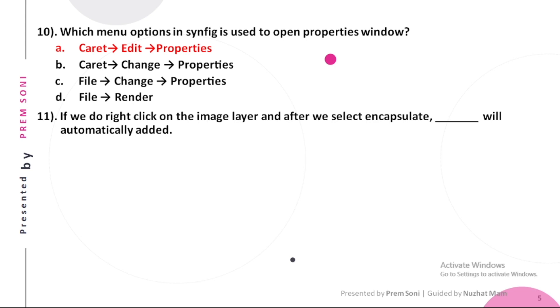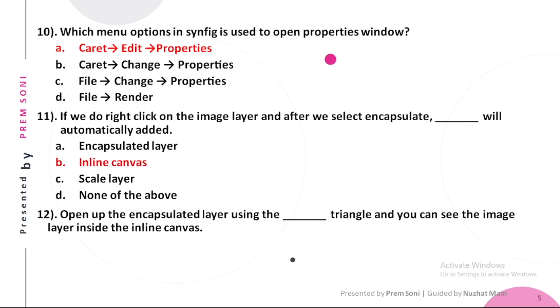Eleventh, if we do right click on the image layer and after we select encapsulate, dash will automatically be added. Options are: a. Encapsulated layer, b. Inline canvas, c. Scale layer, d. None of the above. The answer is Inline canvas. Twelfth, open up the encapsulated layer using the dash triangle and you can see the image layer inside the inline canvas. Options are: a. Big, b. Large, c. Small, d. None of the above. The answer is Small.